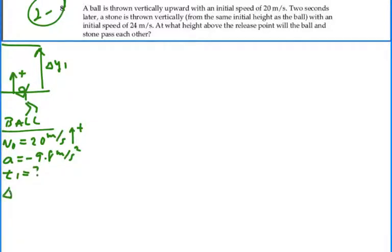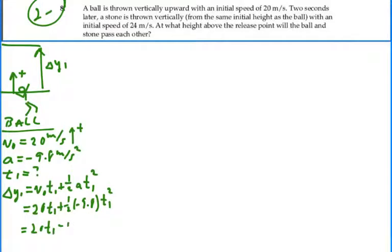And our displacement will be equal to our initial velocity times time plus one-half acceleration times time t1 squared. And this will be 20t1 plus one-half times negative 9.8t1 squared. So this is 20t1 minus 4.9t1 squared. Alright, that describes the ball.